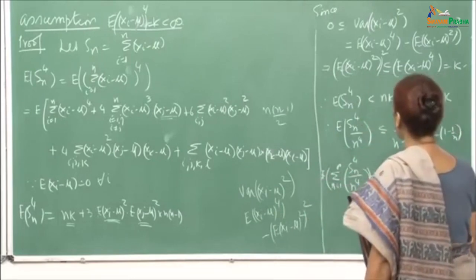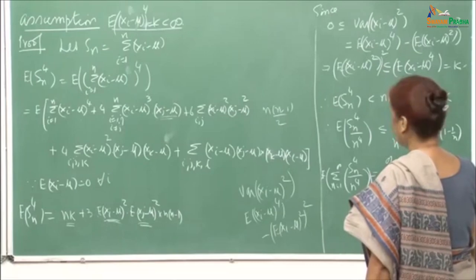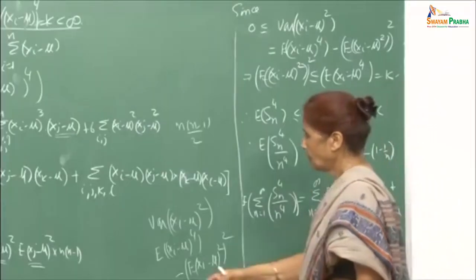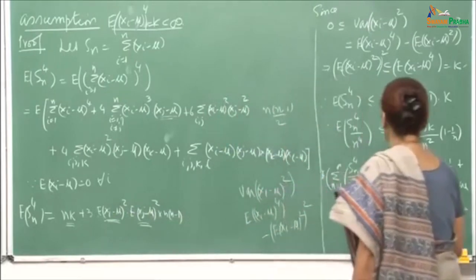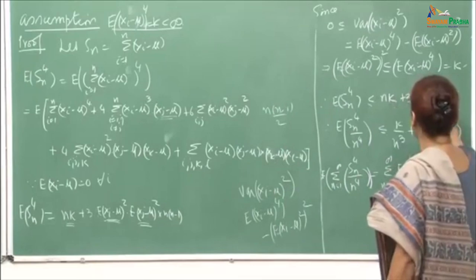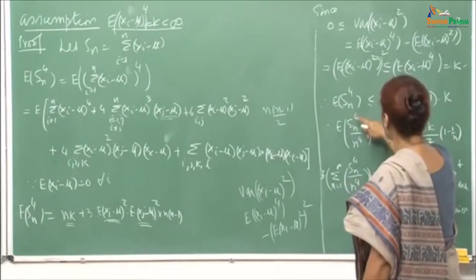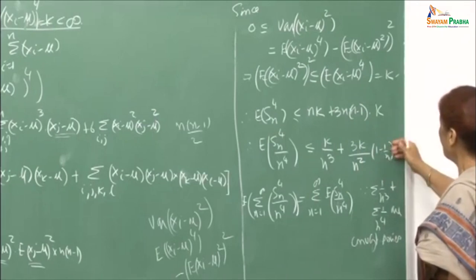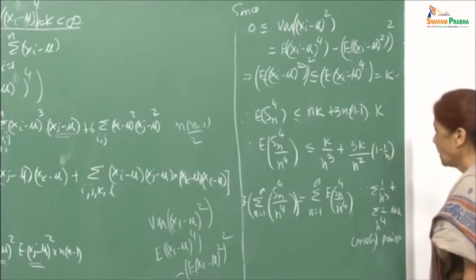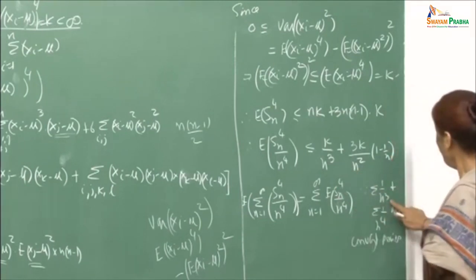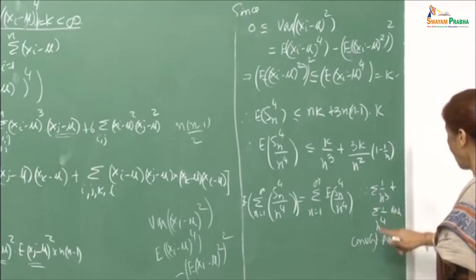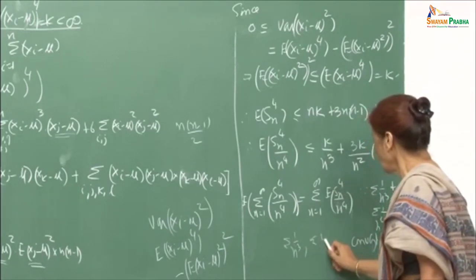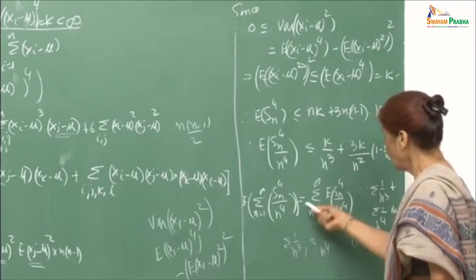Dividing both sides by n^4, E[s_n^4]/n^4 ≤ k/n^3 + 3k/n^2 · (1 - 1/n). Since the series sum_{n=1}^{infinity} 1/n^3 and sum 1/n^2 are both convergent, the series sum_{n=1}^{infinity} E[s_n^4]/n^4 is finite. By linearity of expectation, E[sum_{n=1}^{infinity} s_n^4/n^4] is finite.